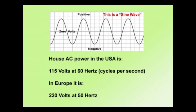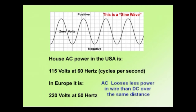Household AC power in the USA is 115 volts at 60 hertz, or cycles per second. In Europe, it's 220 volts at 50 hertz. Look at the waveform at the top – this is called a sine wave pattern, where it's going to plus and minus, positive and negative, a certain number of times per second. That's AC electrical power. AC electricity tends to lose less power in a given wire than DC would going through that same wire.